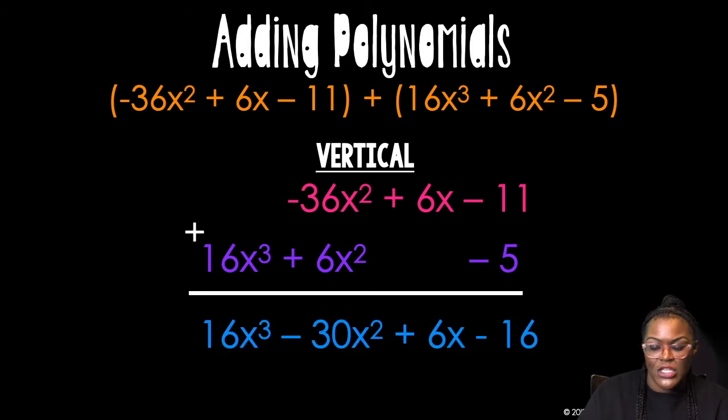So here we go. Cubes first. Quadratics second. Linears. Then constants. In that order. If you did it horizontally, you should still get the same answer, because you should have rearranged them.